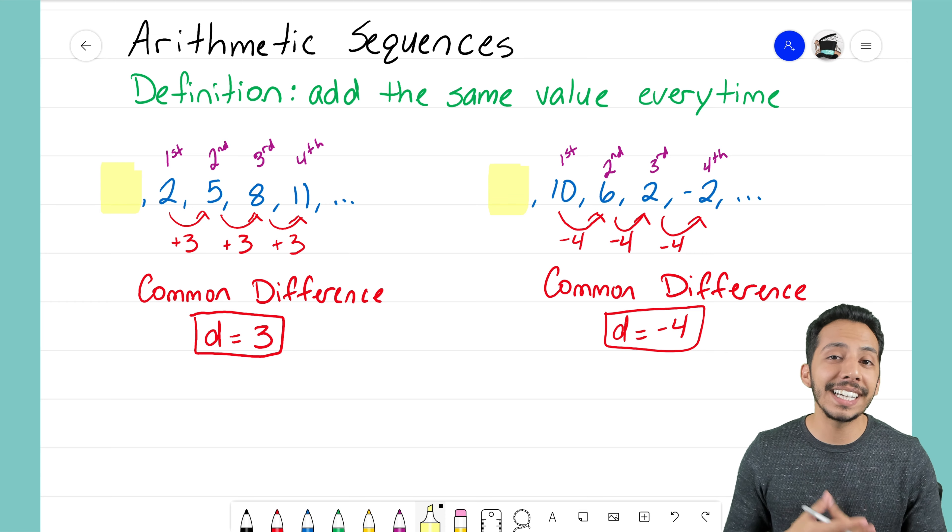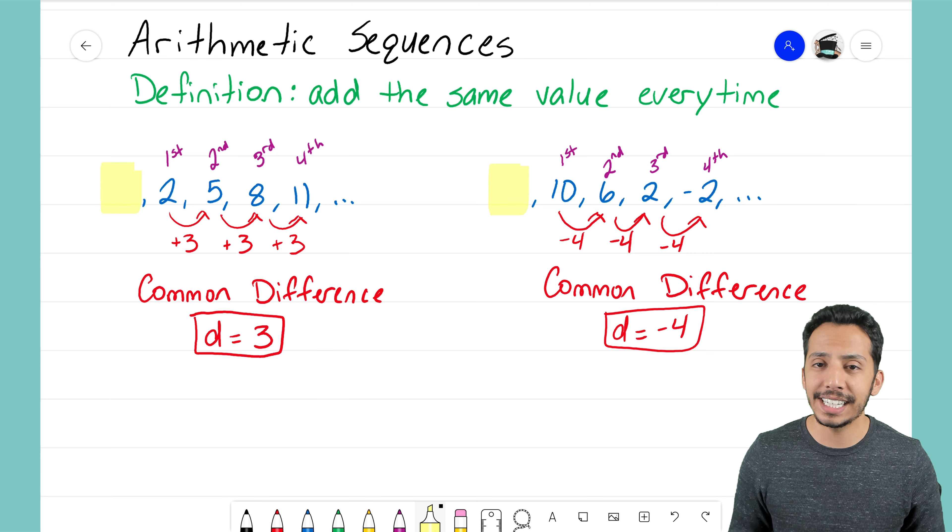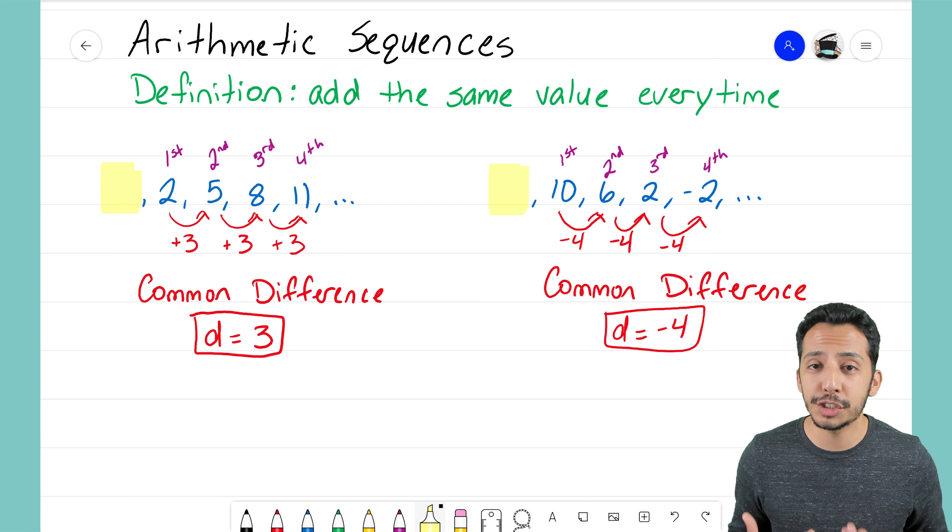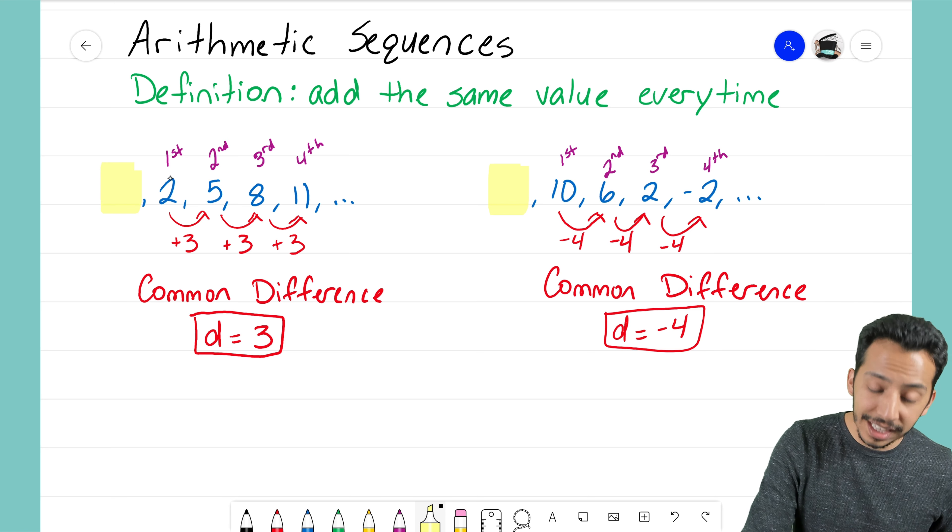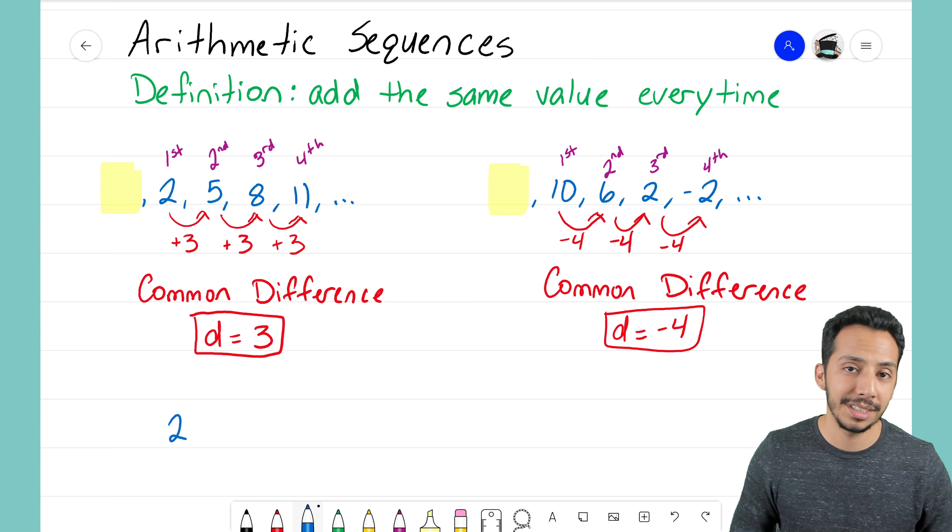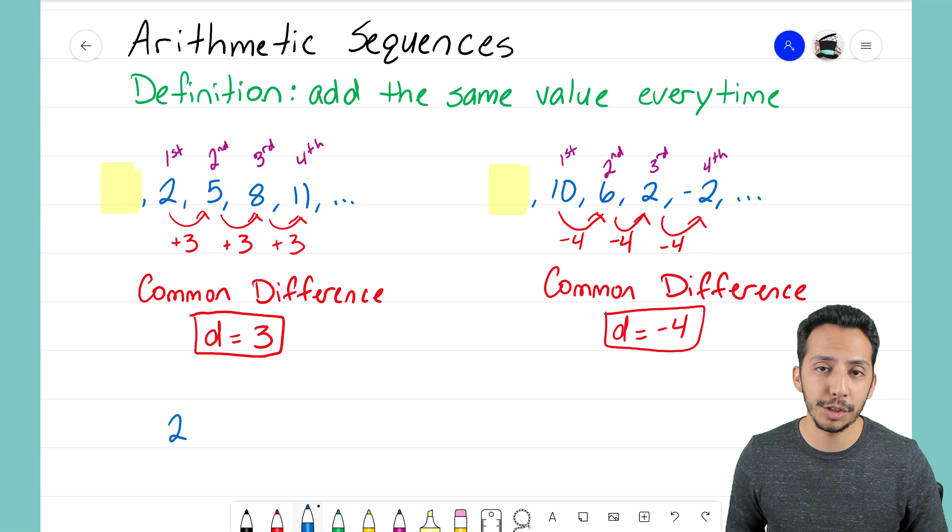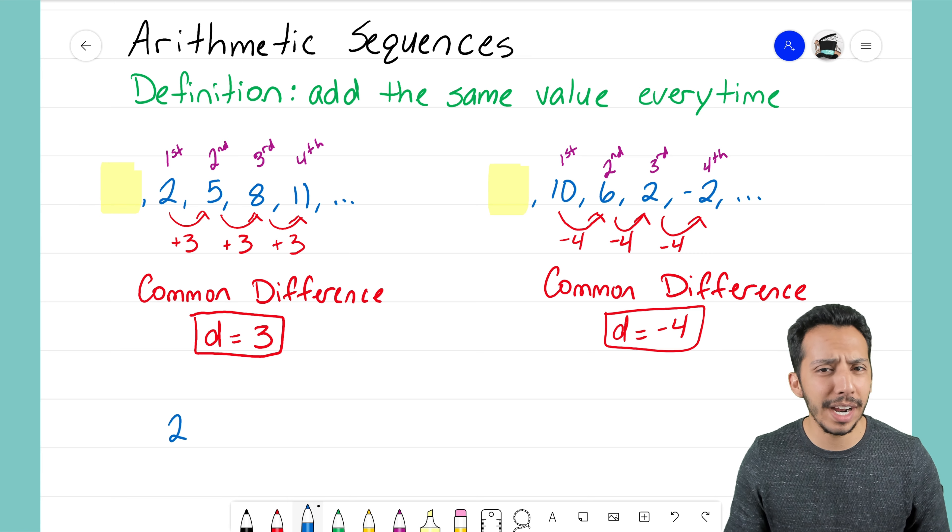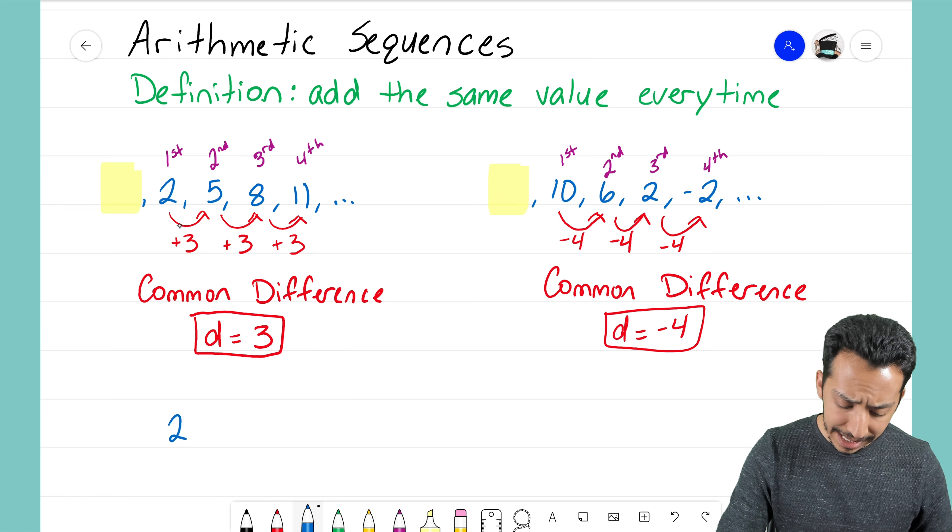And here's how you find it. To find any zero term in a given arithmetic sequence, you just have to start off with your first term. I see here on the left that my first term here is a two. You take your first term, and instead of adding the common difference, right, I don't want to add three because if I'm adding that three, then I'm moving in the forward direction of my sequence and I'll just end up with five.